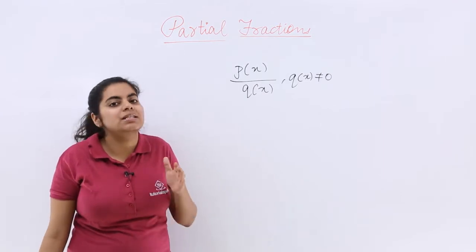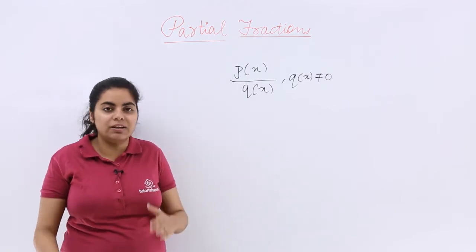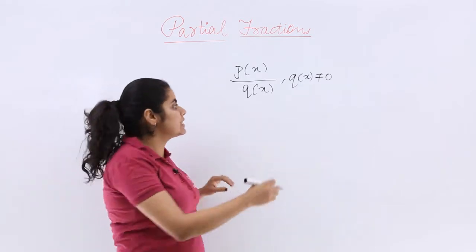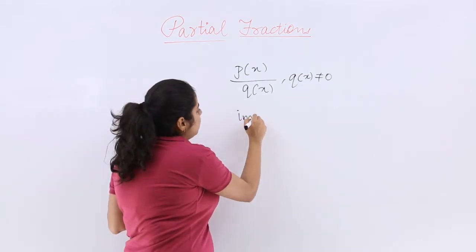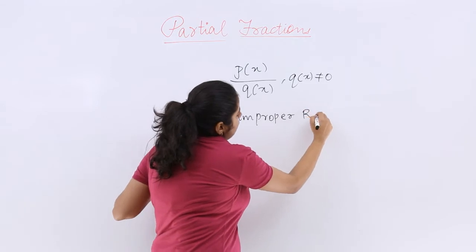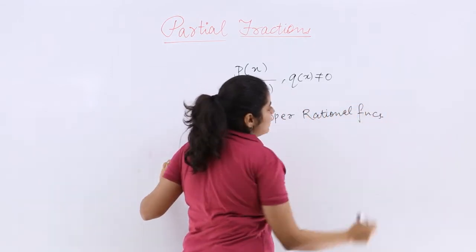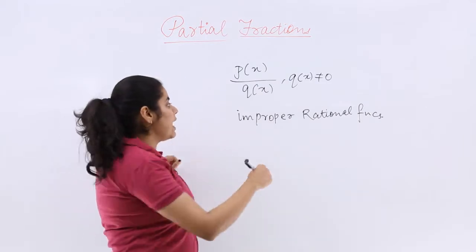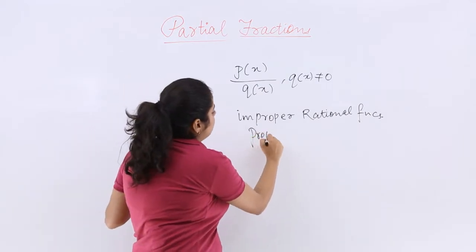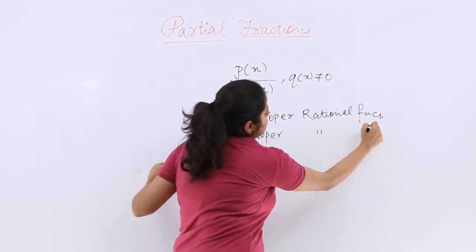It is always seen that you can classify the rational functions into two categories. The first category would be improper rational functions, and the next would be proper rational functions.